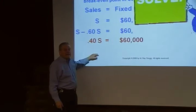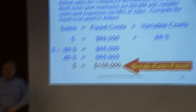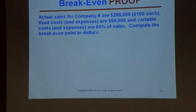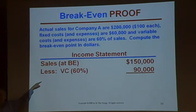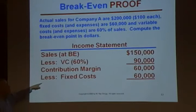$150,000 in sales is the break-even point. Let's verify with an income statement: sales of $150,000, subtract variable costs of $90,000 (60% of $150,000) — that subtotal is contribution margin — then subtract fixed costs of $60,000. Net income is zero. When sales are $150,000, net income is exactly zero. That is the point — the break-even formula, the level of sales at which you break even.